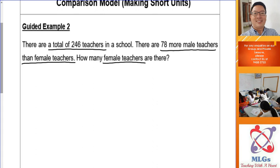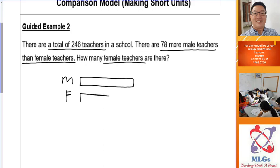You always draw from the beginning. Look at the first sentence: there are a total of 246 teachers in a school. If this sentence doesn't give you much information to draw, don't worry — read the next sentence. There are 78 more male teachers than female teachers. The male teachers have a longer rectangle and the female teachers have a shorter rectangle. The 78 more goes outside — that is your difference between male and female. Then go back to the first sentence: the total is 246, indicated at the side of the model.